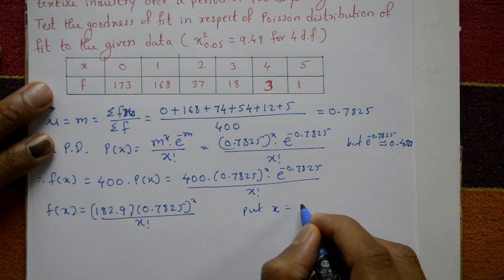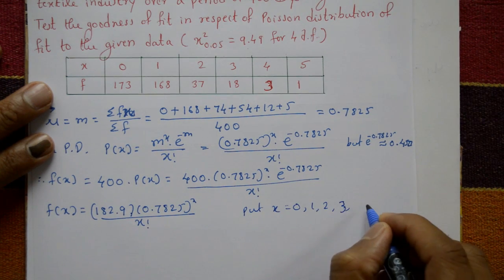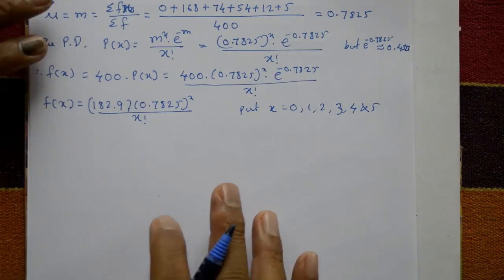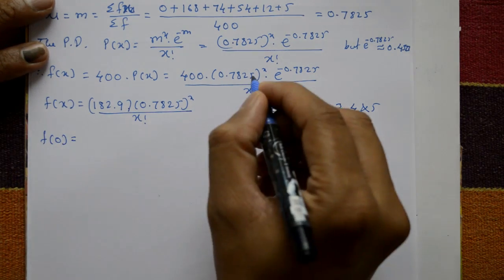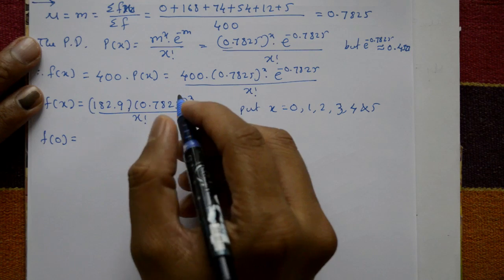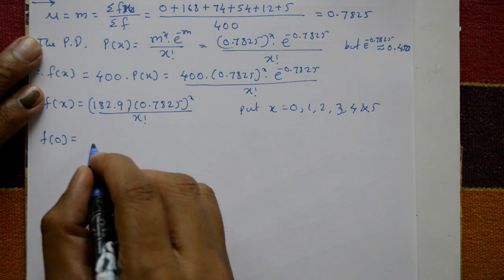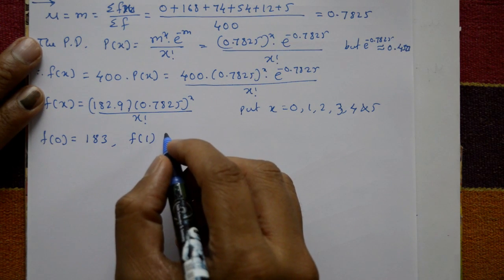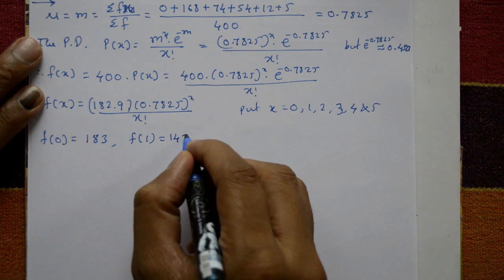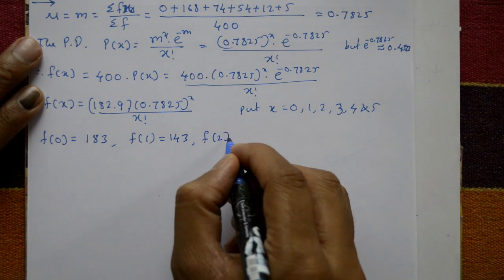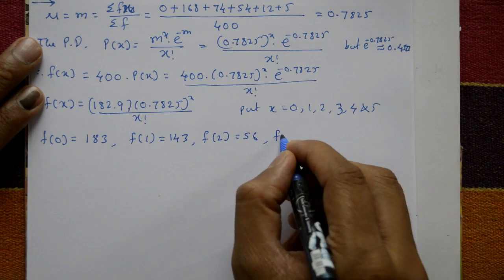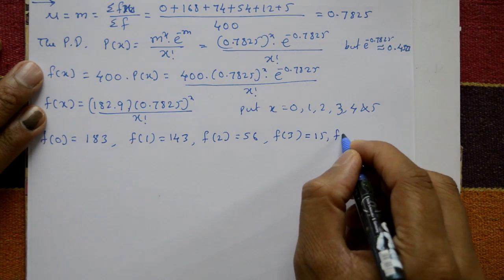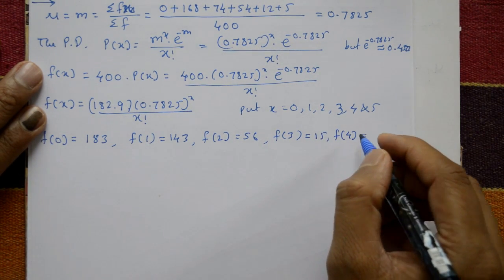Putting x = 0 gives expected frequency approximately 183. Putting x = 1 gives approximately 143. Putting x = 2 gives approximately 56. Putting x = 3 gives approximately 15. Putting x = 4 gives approximately 3. Putting x = 5 gives approximately 0.